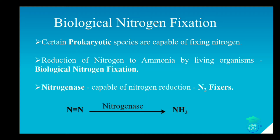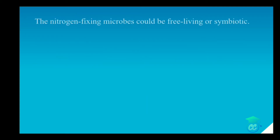Next is biological nitrogen fixation. Certain prokaryotic species are capable of fixing nitrogen. The reduction of nitrogen to ammonia by living organisms is known as biological nitrogen fixation. This process is accomplished by using nitrogen fixers such as microorganisms present in the soil. These nitrogen fixing microbes can be free living as well as symbiotic.